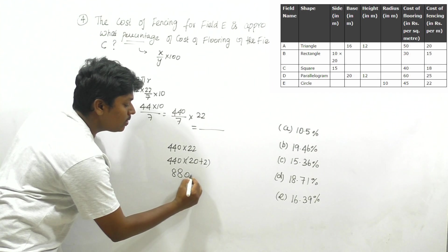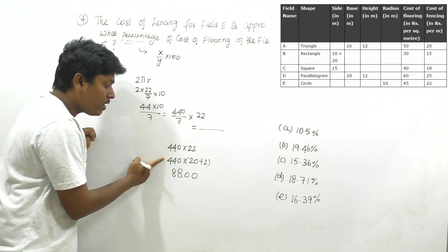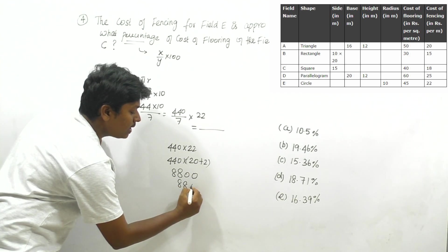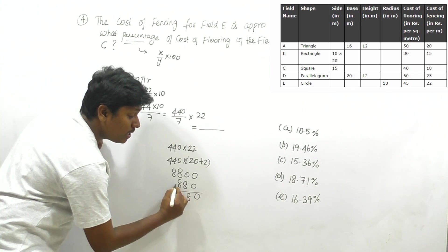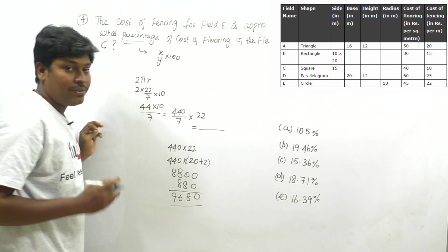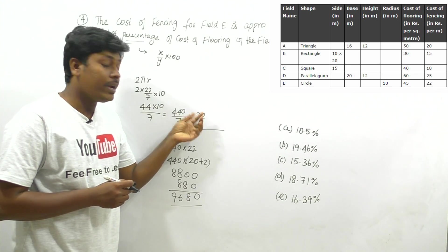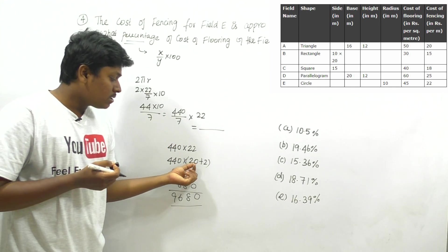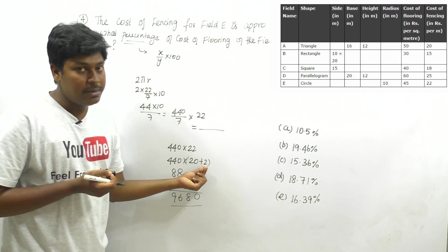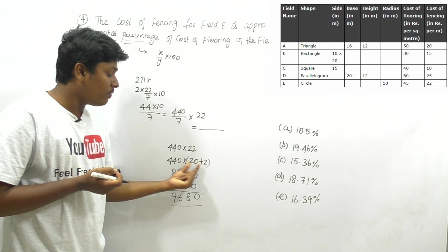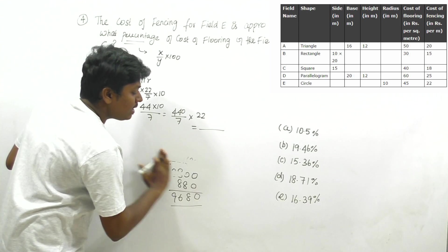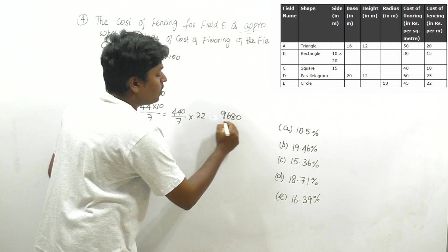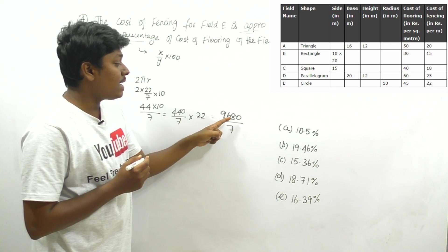440 × 22 = 440 × 20 + 440 × 2 = 8800 + 880 = 9680. So fencing cost for field E = 9680 ÷ 7. Dividing: 9680 ÷ 7 ≈ 1382. This is an approximation question so we stop at 1382.